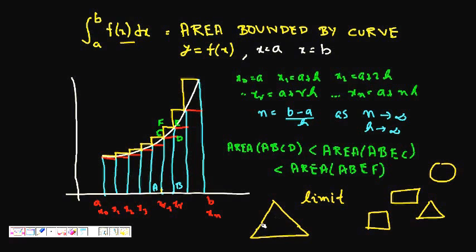For example, take a triangle — I don't know how to find its area directly, but I can divide it into small rectangles. I find the area of each small rectangle and sum them up. This will approximately give me the area of the triangle. It will be slightly less because some small portions near the edges aren't covered by the rectangles, but it will be very approximately equal to the actual area. We try to do the same thing for a curve.